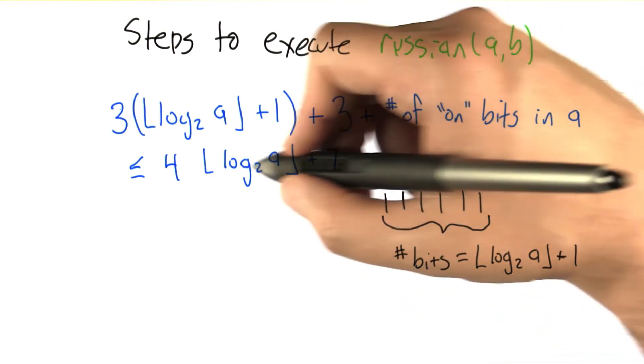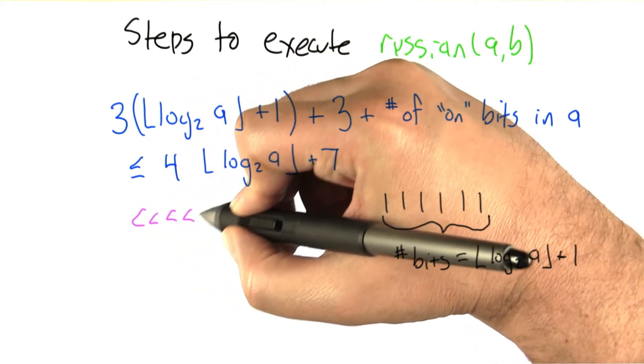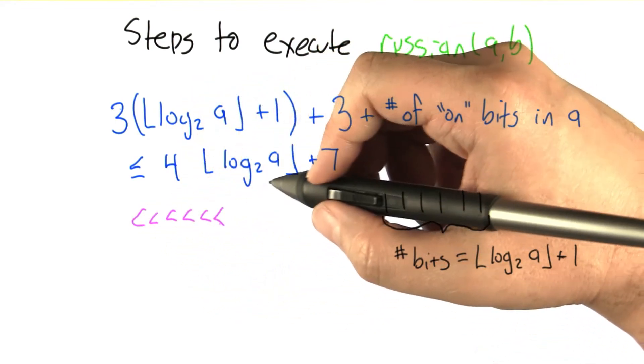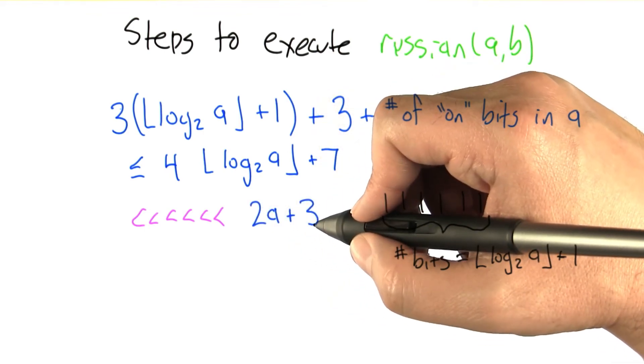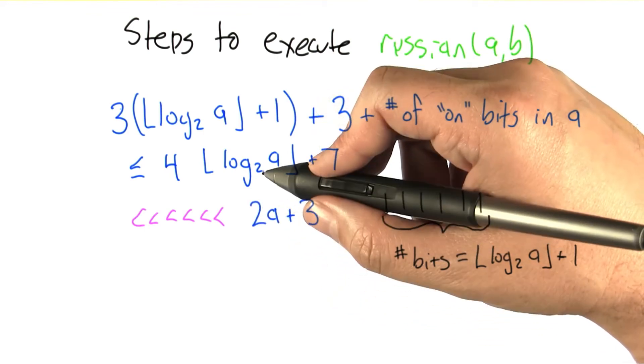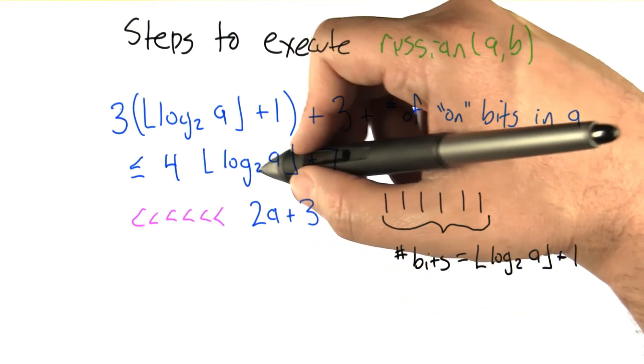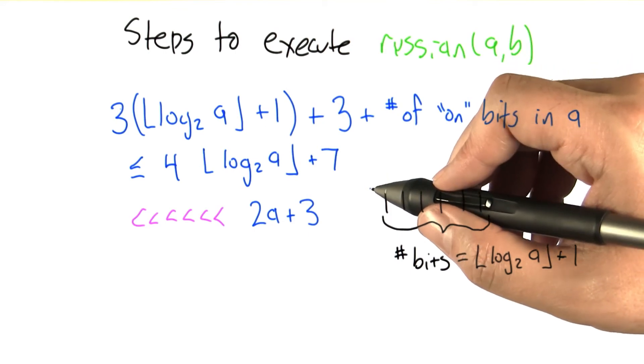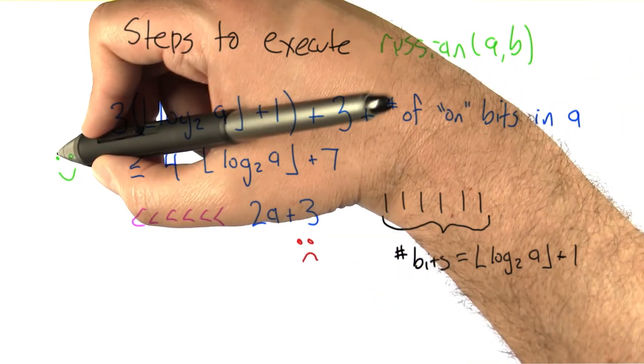Now, one thing that I'd like to point out here is that this quantity is much, much, much, much, much less in general than some linear function in a like what we get for naive. Naive grows a lot faster, in fact exponentially faster, literally exponentially faster than the bound on the running time is for Russian. Naive, very, very bad, Russian actually quite good and happy.